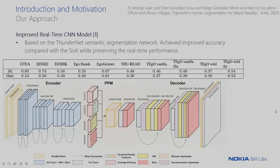Now I'm going to introduce our approach. We decided to use a convolutional neural network machine learning model as it was the most suitable approach for our goal. We took the ThunderNet segmentation network, which was designed to work in real time, and modified it to improve the overall performance for our egocentric human segmentation task. After our modifications, we managed to keep it working in real time while improving overall performance, as shown in the table. Below, we can see the summary of the architecture of the network that we designed and proposed.